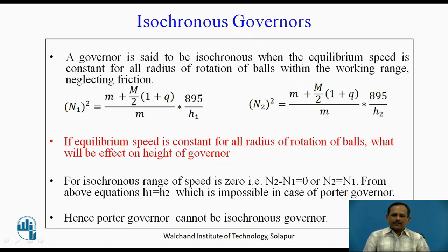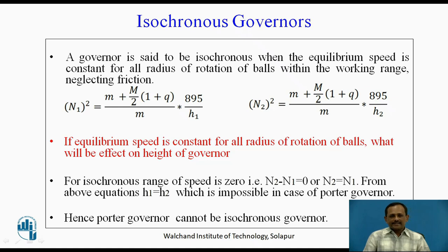Think for a while: if the equilibrium speed is constant for all radius of rotation of the balls, what will be the effect on the height of the governor? If the equilibrium speed is constant for all radius of rotation, then the range of speed n2 minus n1 will be equal to 0, or in other words n2 = n1. From the above two equations we get h1 = h2, which is impossible in case of the Porter governor. Hence, the Porter governor cannot be an isochronous governor.